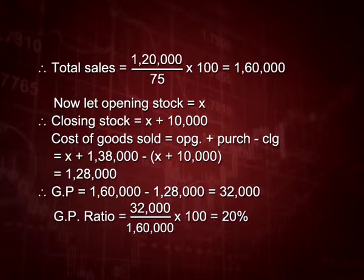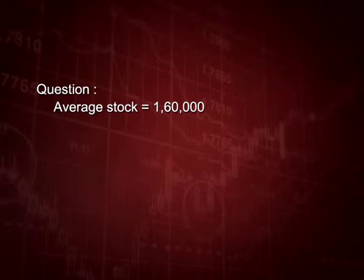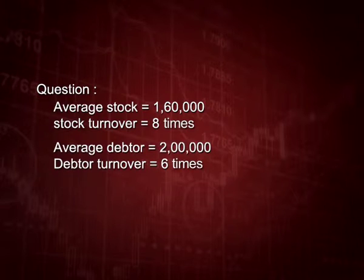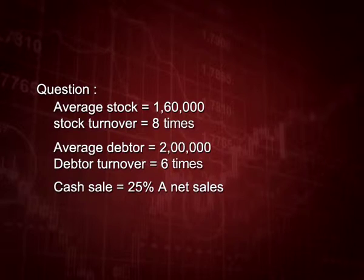Let us have a combination question on GP ratio, stock turnover, and debtor turnover. Given: average stock is 1 lakh 60 thousand, stock turnover is 8 times, average debtor is 2 lakh, debtor turnover is 6 times, and cash sales are 25 percent of net sales. We will first use stock turnover to find cost of goods sold, then debtor turnover to find credit sales, then add cash sales to get total sales, and finally calculate the GP ratio.